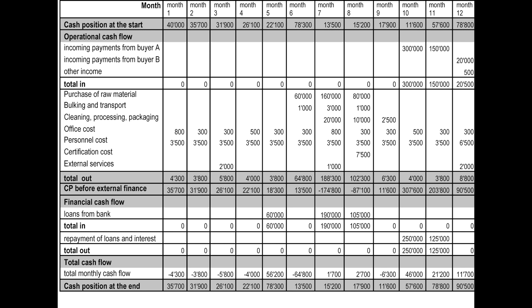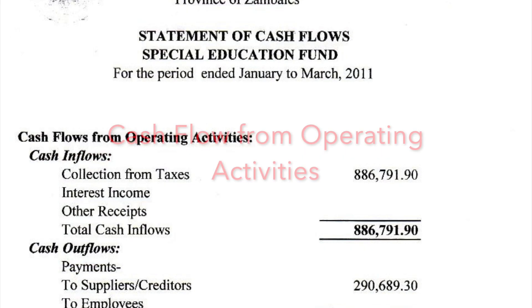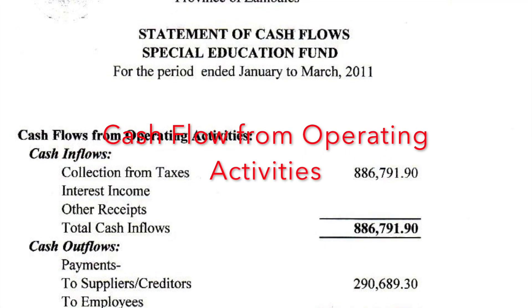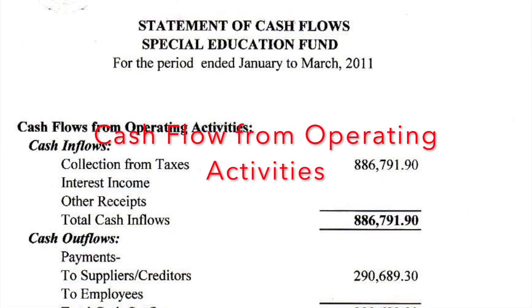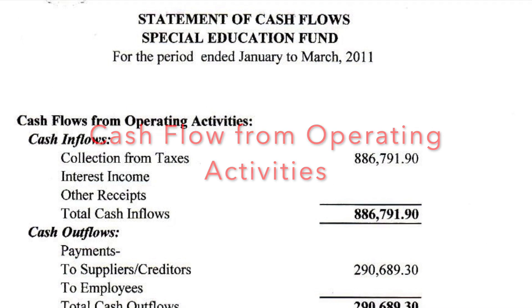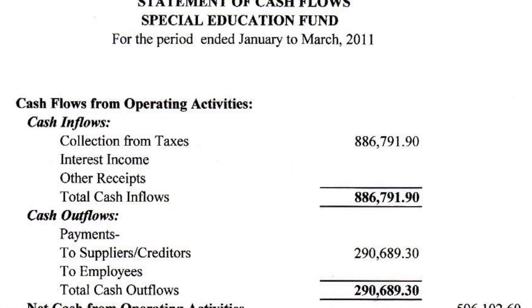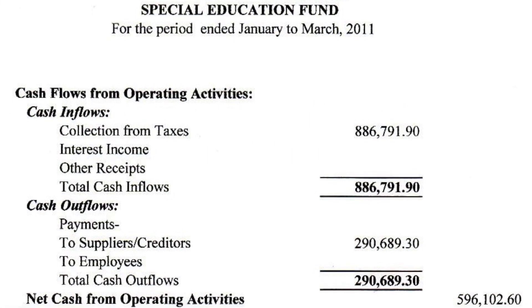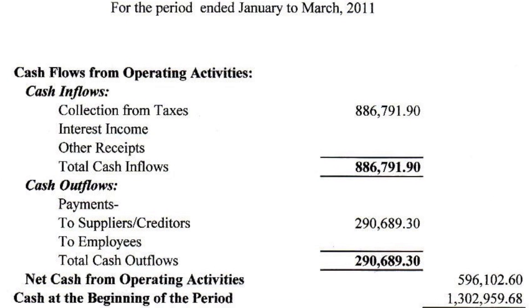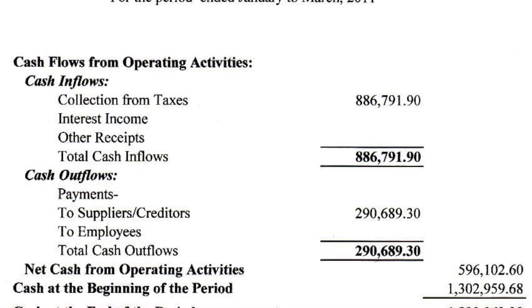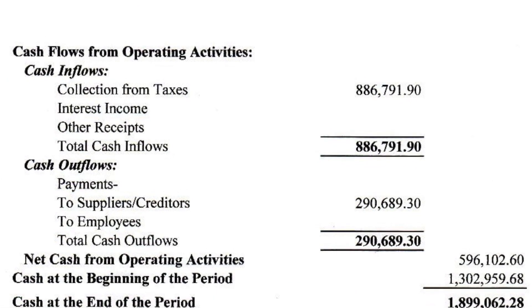These cash inflows and outflows are classified into three sections. First of all, you have operating activities, and this refers to cash flow generated through the business's main operations, such as where goods are sold or where services are provided.